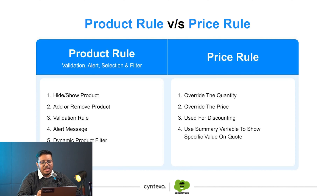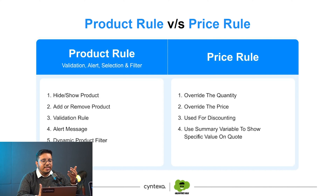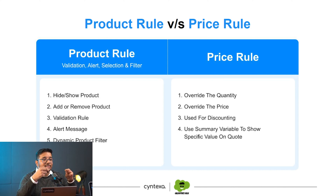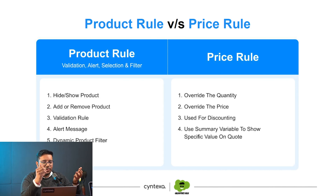Then we have price rules. Price rules go around quantity and pricing itself. They can override the quantity — for example, if a particular product is being sold and a related product needs to be sold at twice the quantity, like if someone is buying three laptops and they should be getting six keyboard kits, we can do that with price rules configuration. We can also override the price, and they can be used for discounting as well.